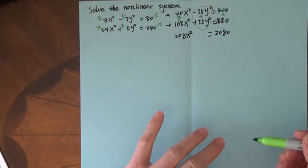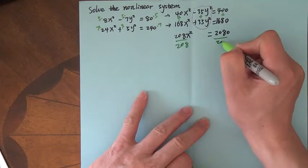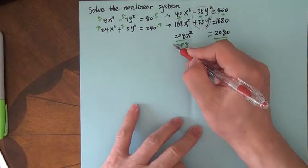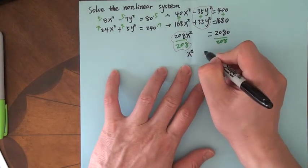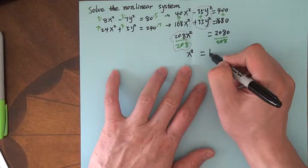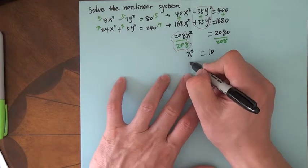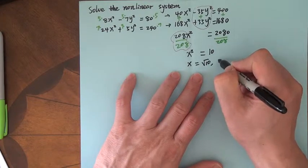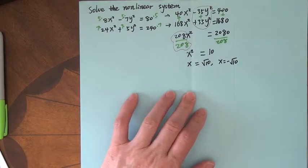It looks like a nice number. Now, if both sides divided by 208, then 208 divided by 208 is 1, and 1 times x squared is x squared on the left. On the right-hand side is just 10. So if x squared is 10, then x can be positive radical 10, and x can be negative radical 10.